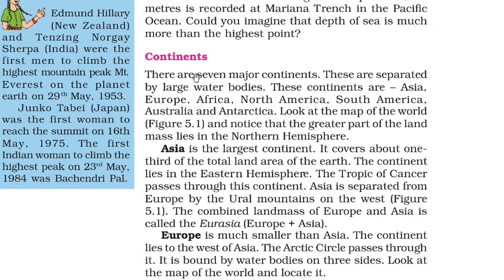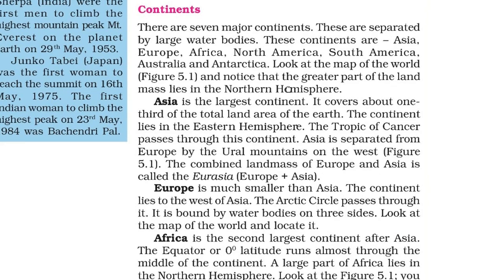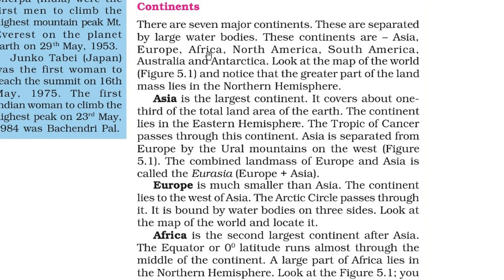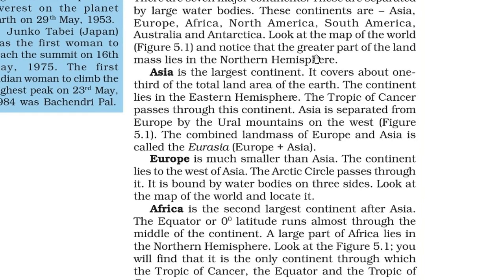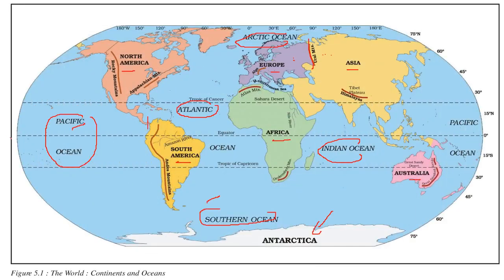There are seven major continents, separated by large water bodies. The continents are Asia, Europe, Africa, North America, South America, Australia, and Antarctica. The greater part of the landmass lies in the northern hemisphere, with somewhat less landmass in the southern hemisphere.